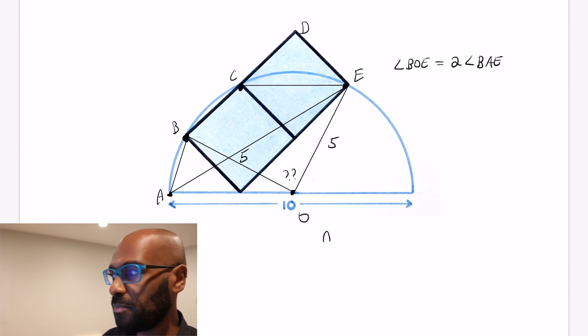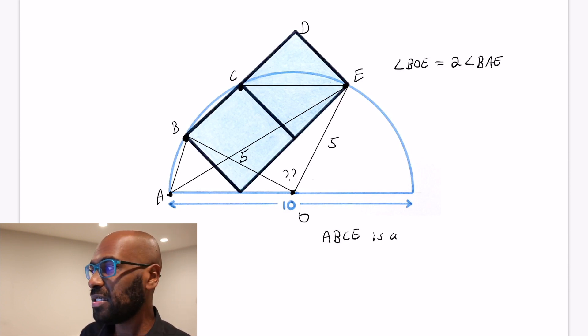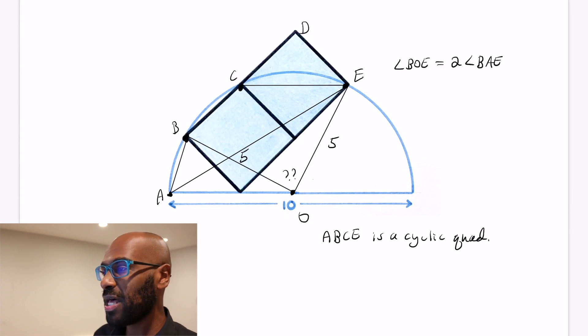Right, so A, B, C, E itself is a cyclic quadrilateral. And what that means is, there's this nice property of cyclic quadrilaterals, which is that opposing angles add up to 180 degrees.